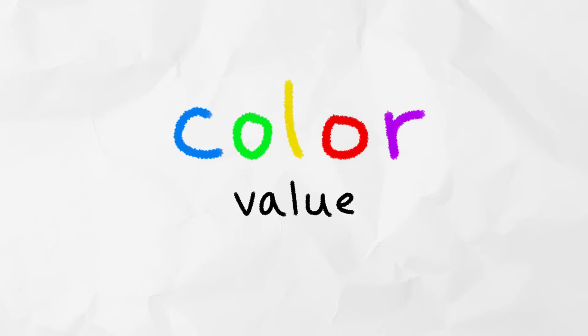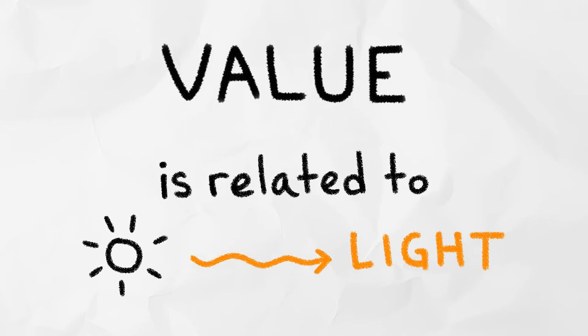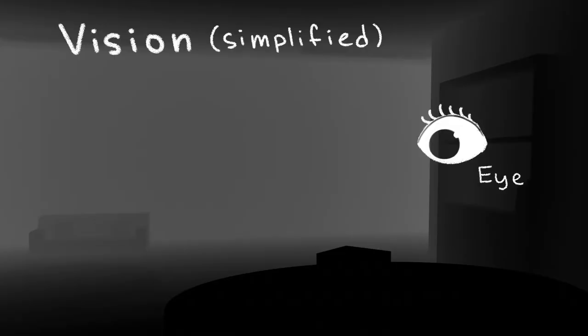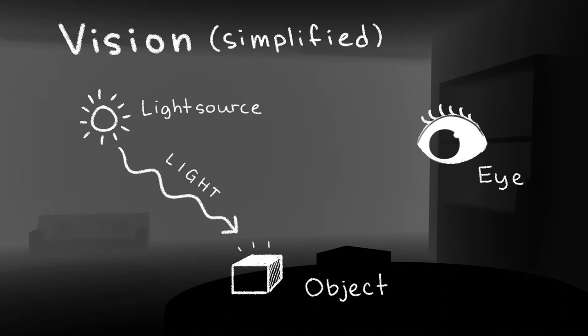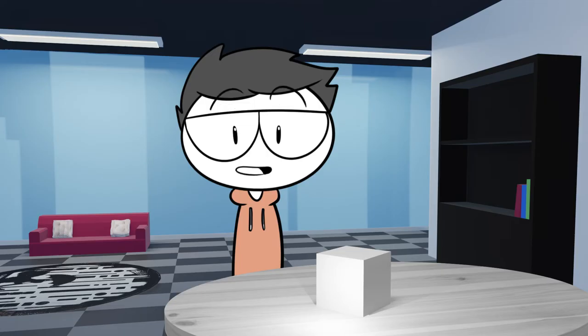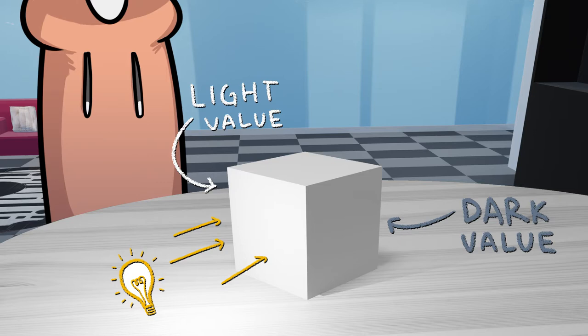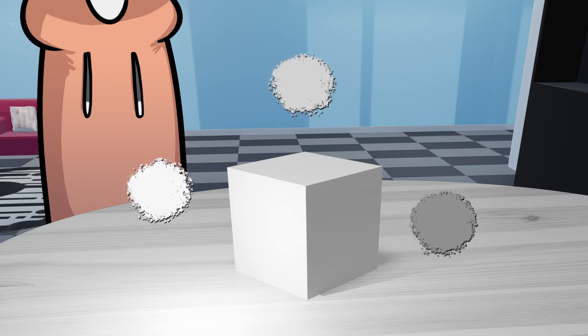Instead of seeing values as a subset of color, we should try and see them on the same level. In fact, many times artists will tell you that values are more important than colors. And why is that? Values are directly related to light. Vision is dependent on light, and the only way to see something is if that object interacts with that light. The parts of an object that are further away from the light source will naturally be less lit up. This also applies if something is blocking the light from reaching the surface or if the surface is angled away from the light. This gradual decrease in light makes it so some parts of the object are darker than others. These values and the difference between them is what lets us see the object and tells us about its three-dimensional form.